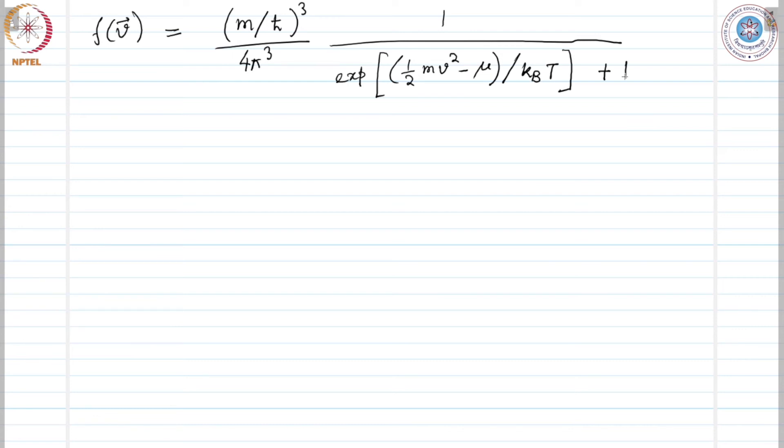Sommerfeld, then using this distribution function, re-examined the Drude model and then replaced the classical Maxwell Boltzmann velocity distribution by this Fermi Dirac velocity distribution function. After doing that, a typical electron in a metal has momentum of the order h cross times the Fermi wave vector. Considering this, Sommerfeld got an expression for the mean free velocity path of the electrons.